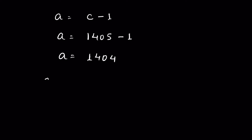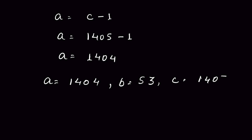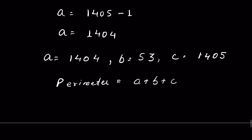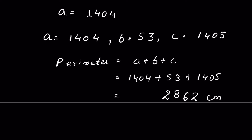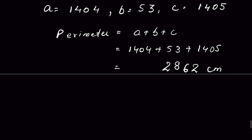The three sides of the triangle are: a equals 1404, b equals 53, and c equals 1405. The perimeter is a + b + c, which is 1404 + 53 + 1405. That gives us the perimeter of the triangle.